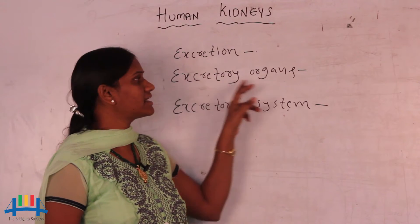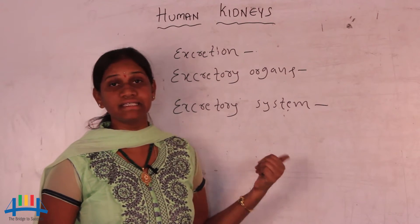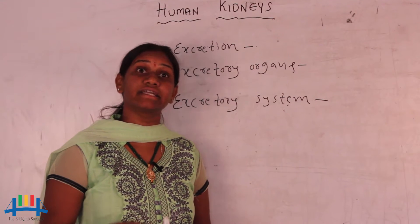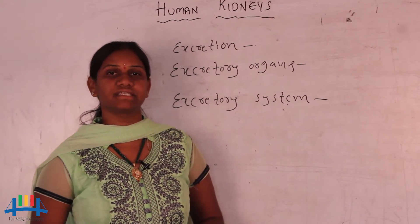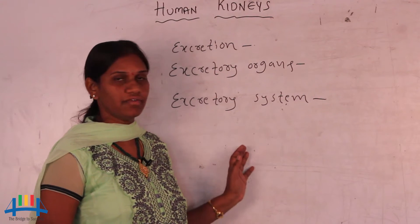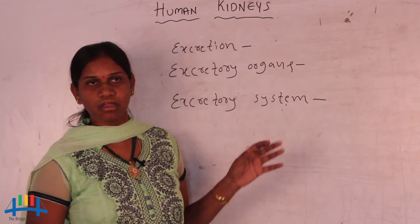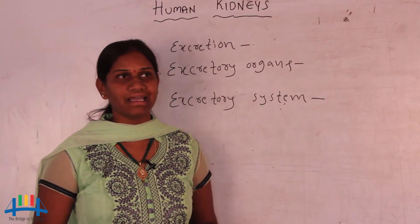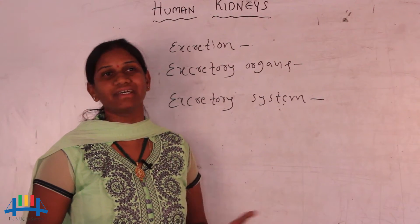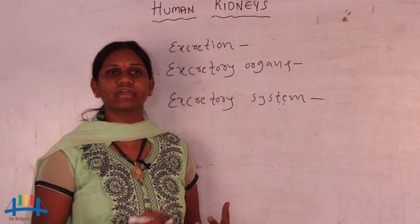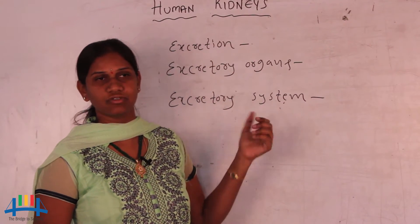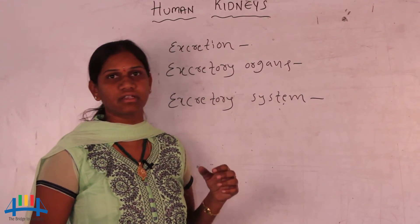The excretory system refers to the process and the excretory organs involved together as a system. We are going to discuss these three concepts — excretion, excretory organs, and excretory system — with the help of a model, which is a teaching aid. It is very helpful for imagination and visualization.